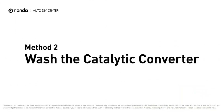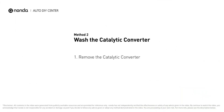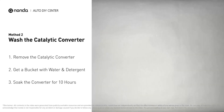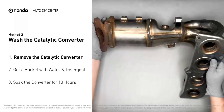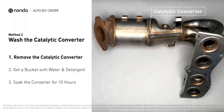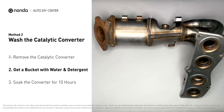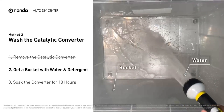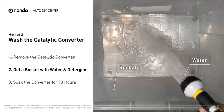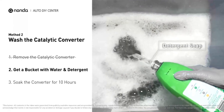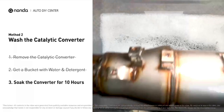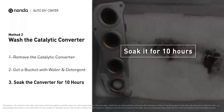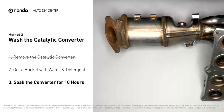Method two: wash the catalytic converter. First, carefully remove the catalytic converter from your vehicle. Then get a bucket, put some detergent soap in it, and foam it up. Put the catalytic converter into the solution and soak it for 10 hours to remove all the crud that's inside of it.